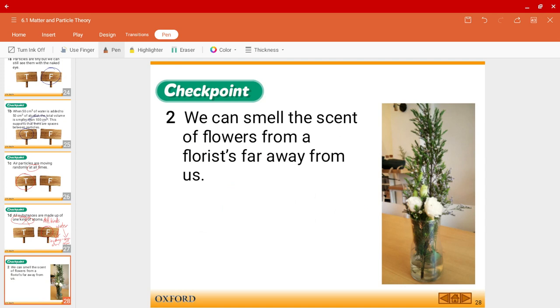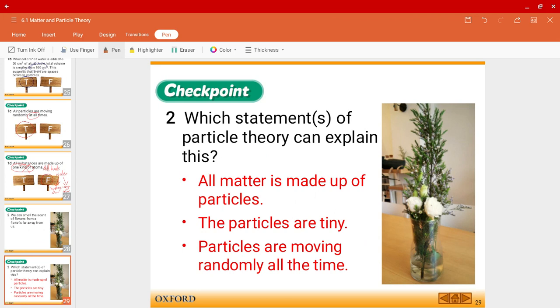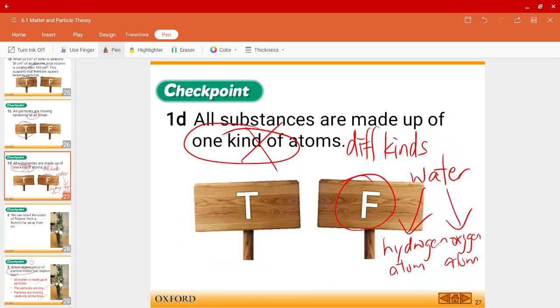Let's see question 2. We can smell the scent of flowers from a florist far away from us. Which statements of the particle theory can explain this? So, of course, you have these answers. All matter is made up of particles. The particles are tiny and particles are moving randomly all the time. So, please make sure you know the five statements of particle theory. Those will be very important. I just want to mention one over here. Not all substances are made of one kind of atoms. There could be some that are made of only one, while some could have more than one.